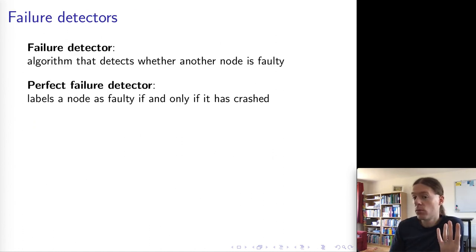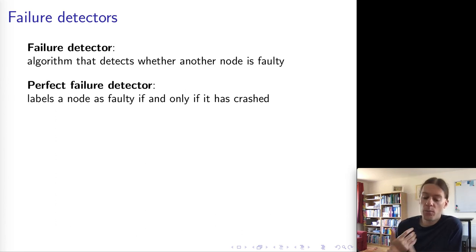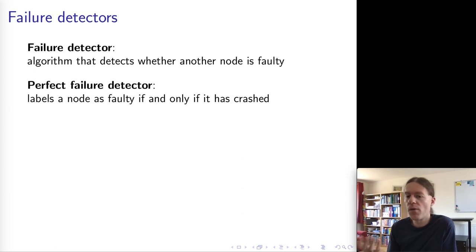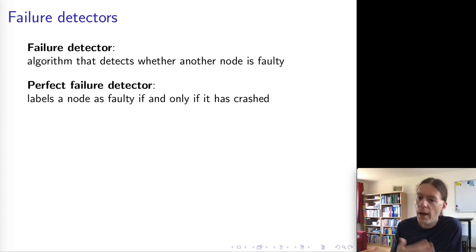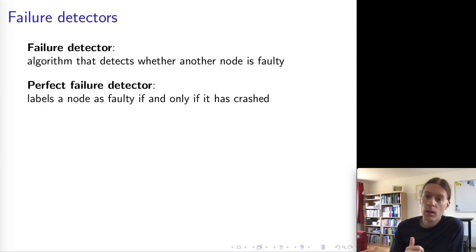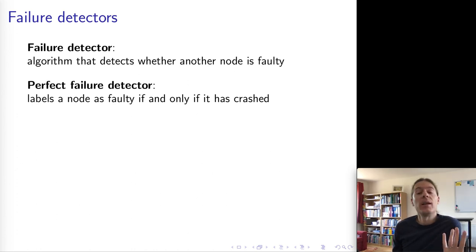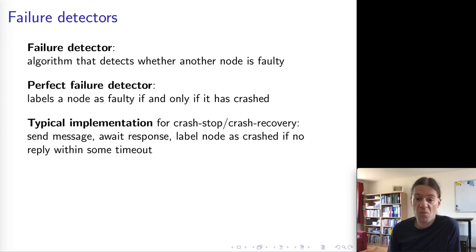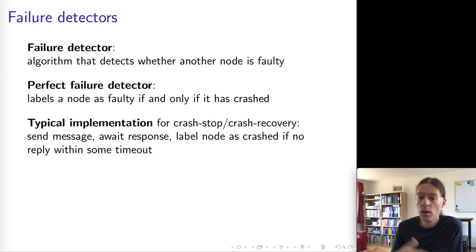In order to tolerate faults, the first thing we have to do is detect a fault, and then handle it. The mechanism for detecting a fault is known as a failure detector — the terminology is a little odd; it should really be called a fault detector, but failure detector is the common term. A failure detector could be a software algorithm, hardware, or some other mechanism for detecting whether another node is faulty. Ideally we would love a perfect failure detector — always accurate at telling us whether another node is faulty. The typical implementation uses timeouts: send a message asking a node to respond if it's alive, and if no response arrives within some amount of time, we conclude that node must have crashed.